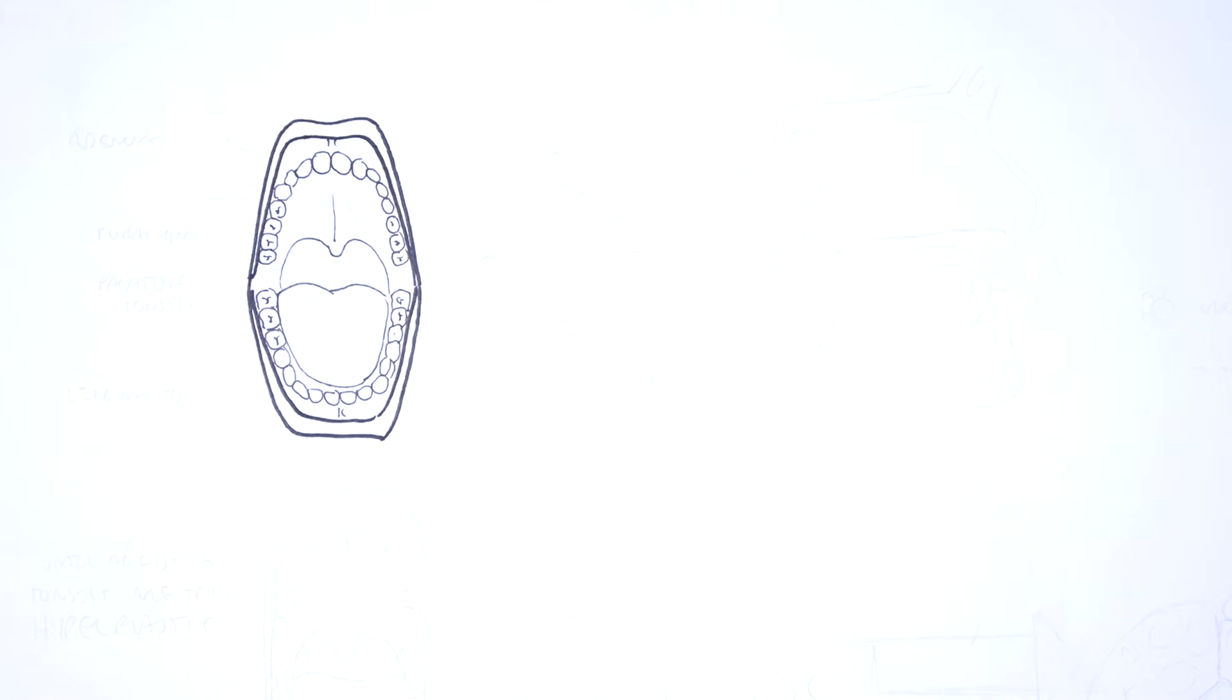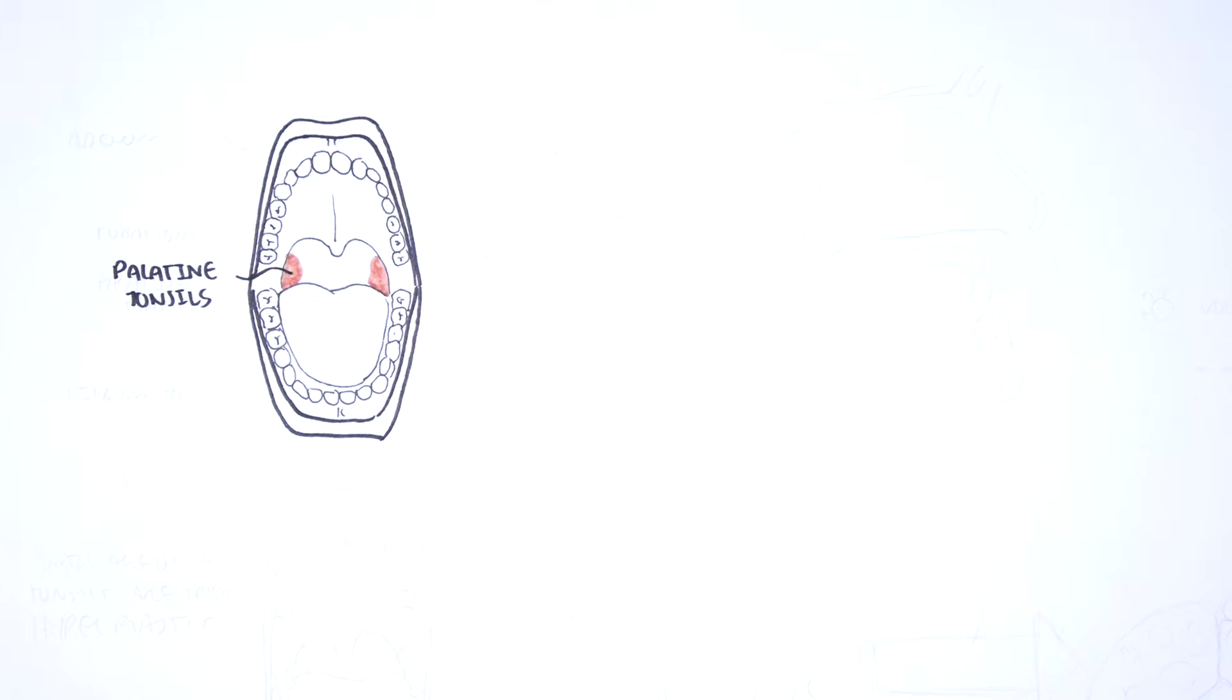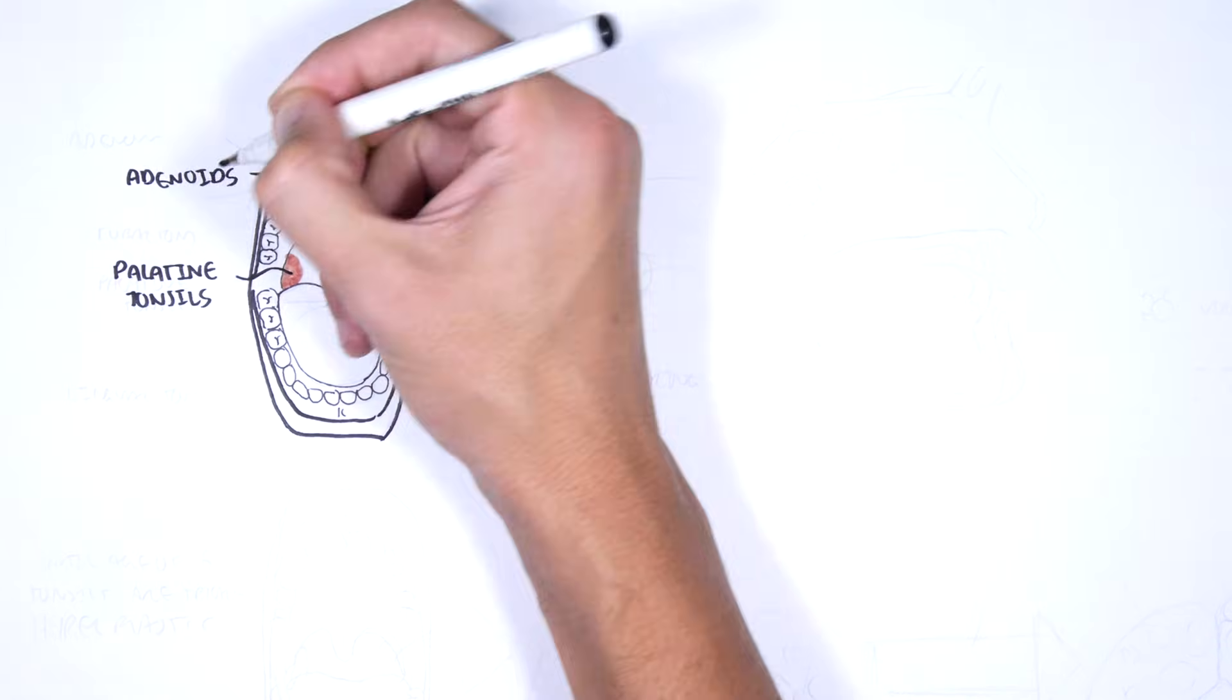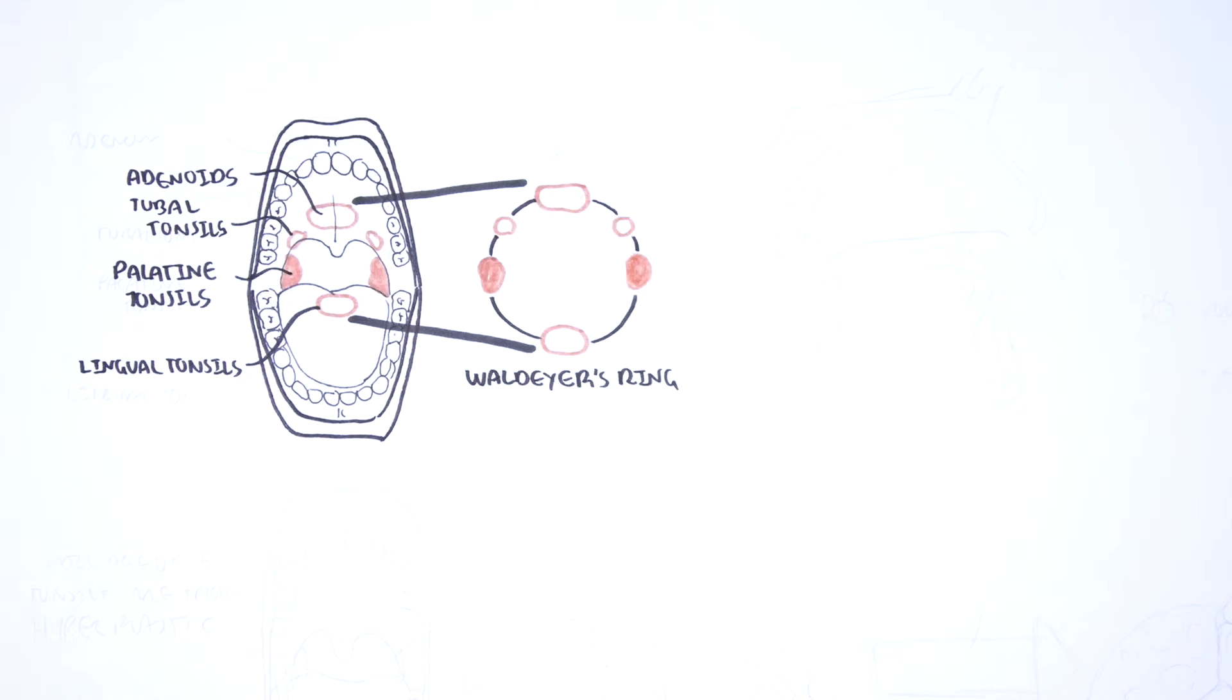The tonsils are part of what is called Waldeyer's ring. Generally when talking about the tonsils we're talking about the palatine tonsils situated on both sides of the throat. There are also the adenoids, the tubal tonsils, and lingual tonsils which make up Waldeyer's ring.